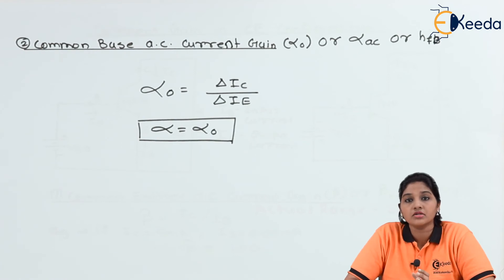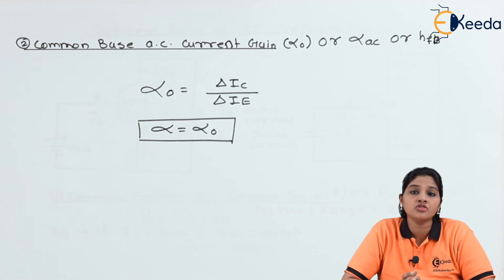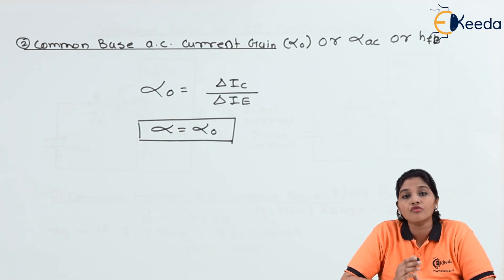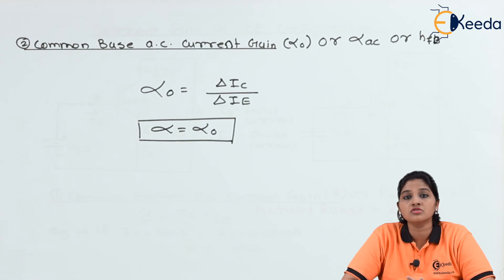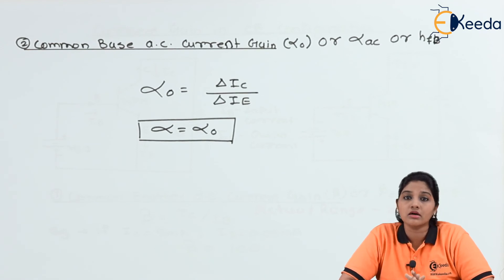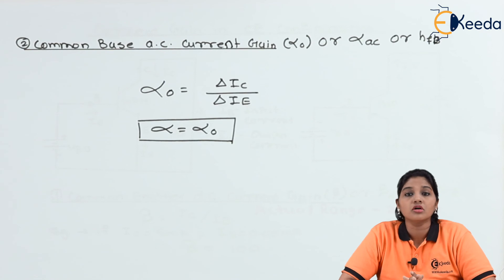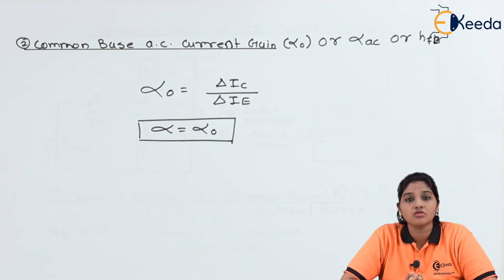Though it is a current gain, DC current gain is also called the large signal current gain because the output resistance of common base configuration is high. The value of DC current gain is less than unity, but it is still called a current gain because in common base configuration, the output resistance of the transistor is higher than the input resistance. This causes a large value of voltage gain and therefore a large value of power gain — and therefore it is called large signal current gain. The value of alpha is always less than unity, and the value of alpha_0 is approximately equal to alpha.